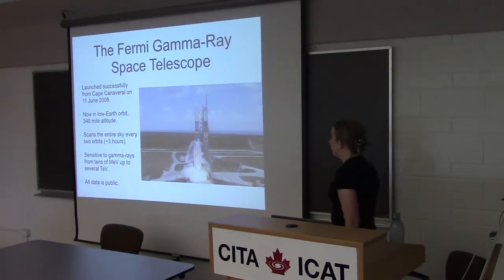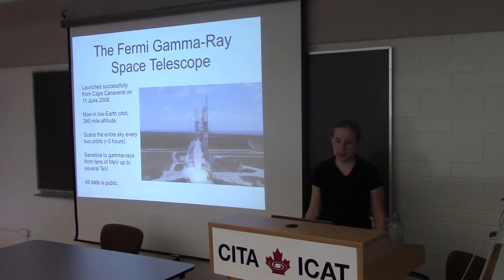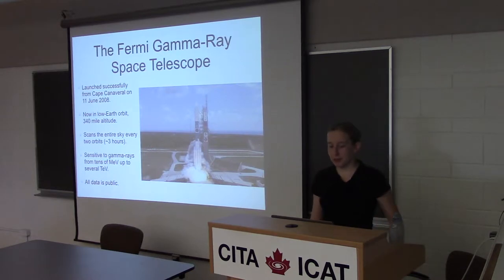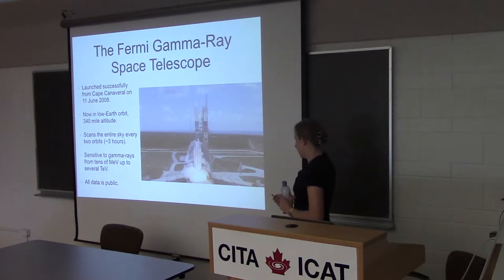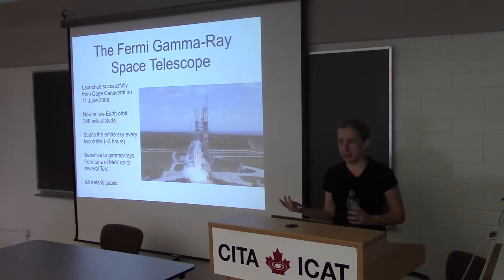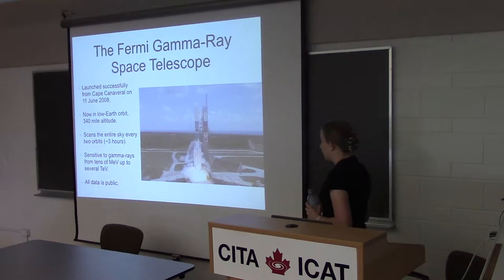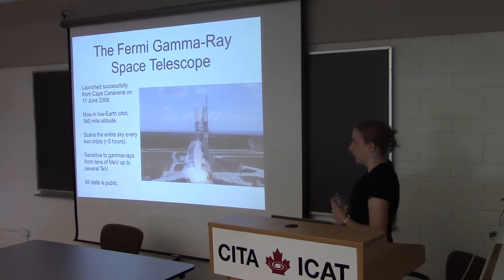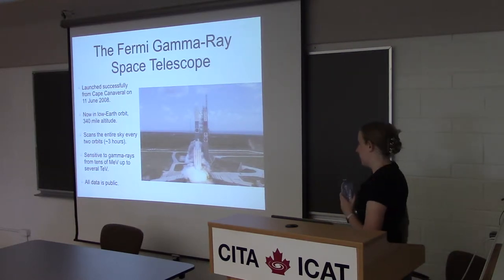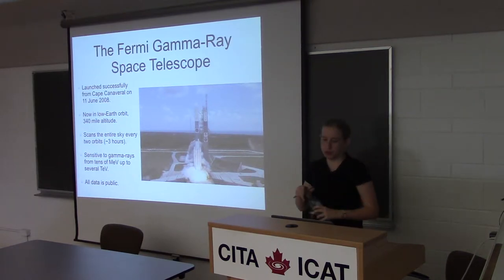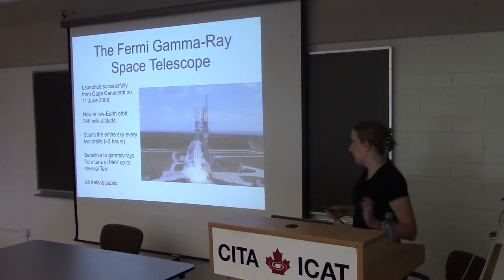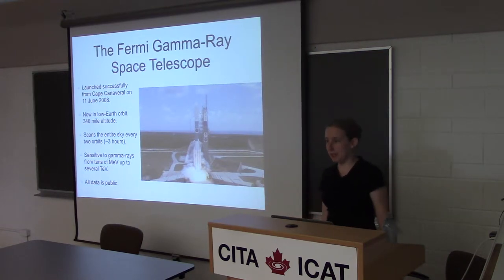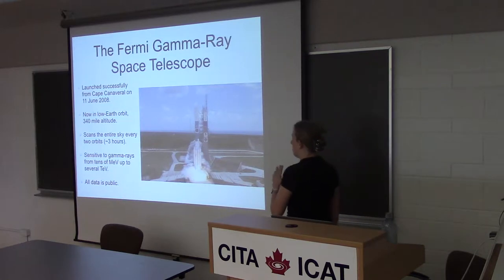That's what we might look for in a dark matter signal. Now let me tell you about the excess which we are actually seeing. All the data I'll show is from the Fermi Gamma-ray Space Telescope. This instrument was launched in 2008, it's in low Earth orbit, and it's a gamma-ray telescope sensitive to gamma rays from tens of MeV up to several TeV. It's a full-sky instrument that scans the entire sky every two orbits — one orbit is 90 minutes. It's been taking data for more than seven years and all that data is public. I'm not a member of the Fermi collaboration; this is all work done purely using the public data set.